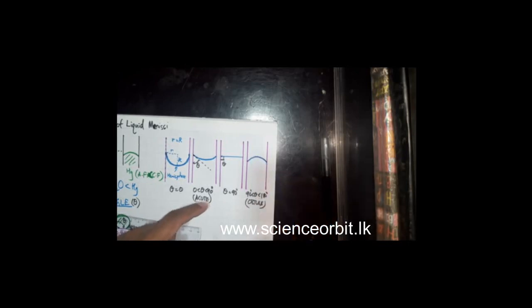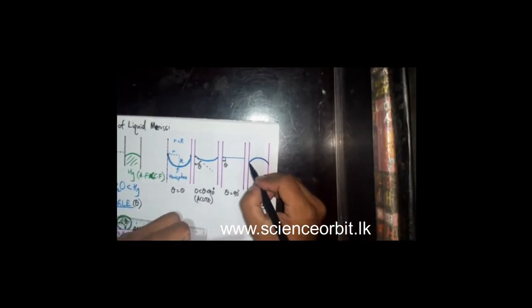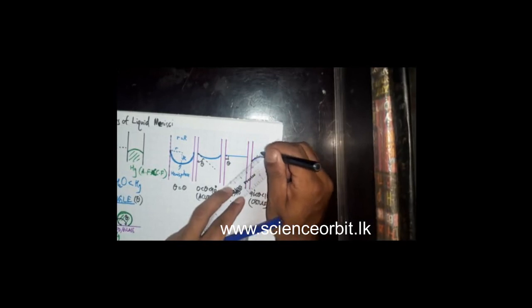For the last case, when your contact angle is an obtuse angle, the liquid meniscus will be bent the other way — like mercury. At the contact point, the solid surface tangent is the purple line, and we draw a tangent to the liquid surface. The angle between these lines inside the liquid gives us the obtuse theta.